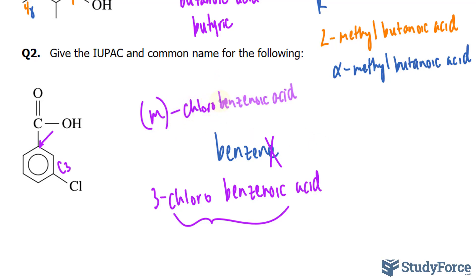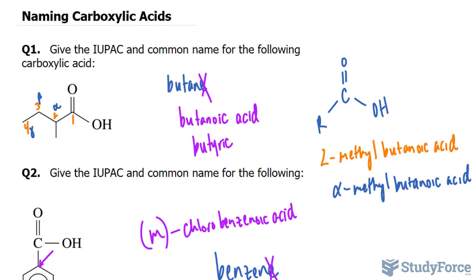On the contrary, if it was at C2, you would say ortho, so you would write down O. And if it was at C4, then it's para. And there you have it, a quick tutorial on naming carboxylic acids.